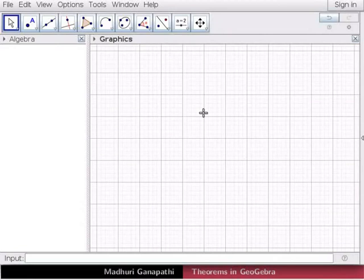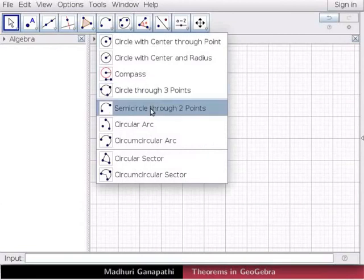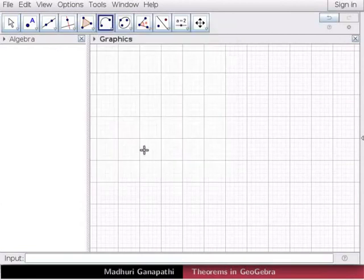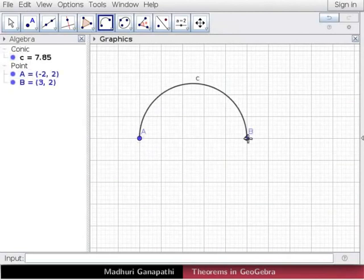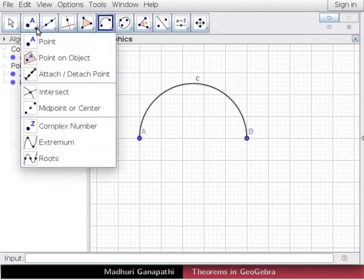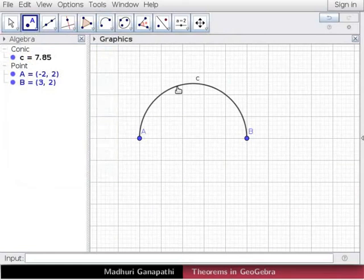We will begin with the drawing of a semicircle. Click on the semicircle through two points tool. Then click to mark two points in the graphics view. Using the Point tool, we will mark another point C on the semicircle.